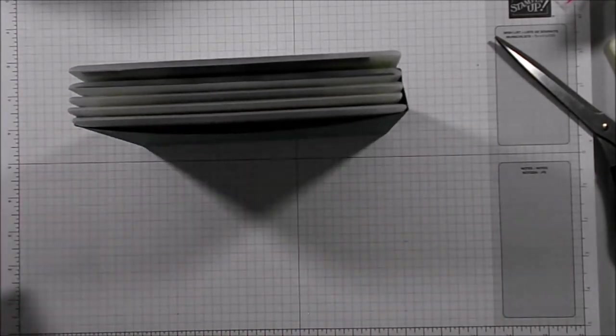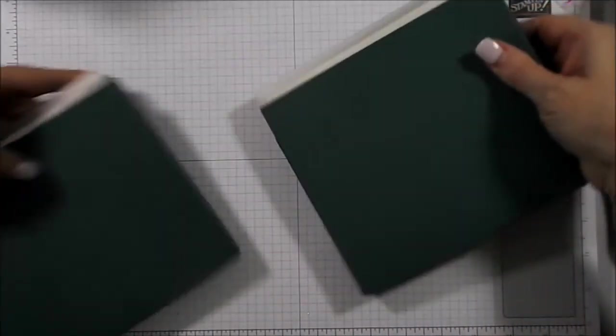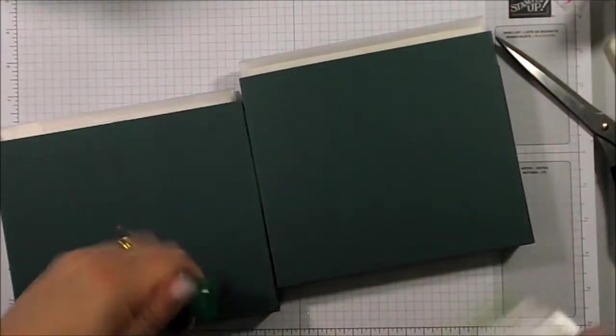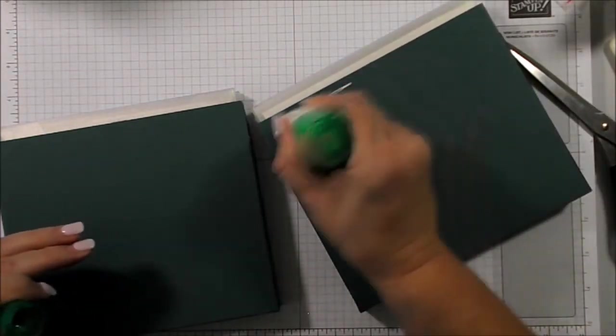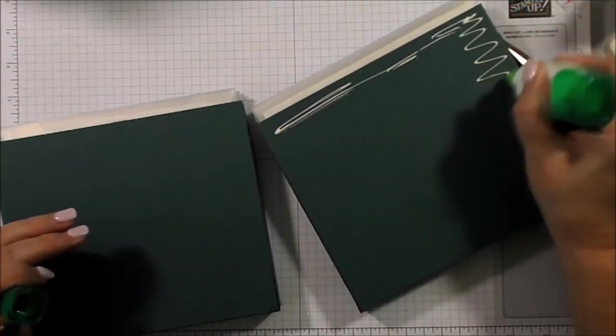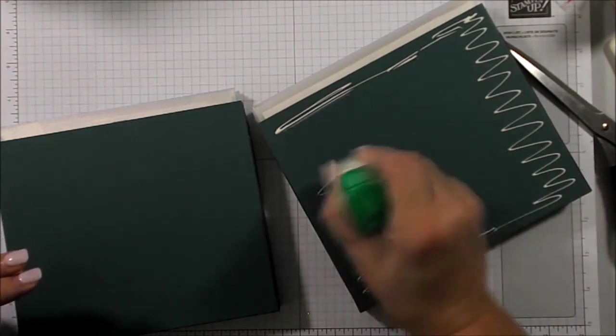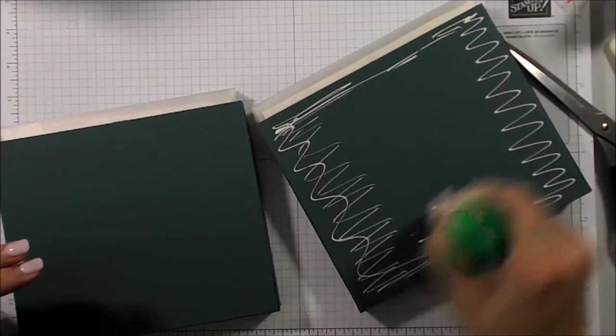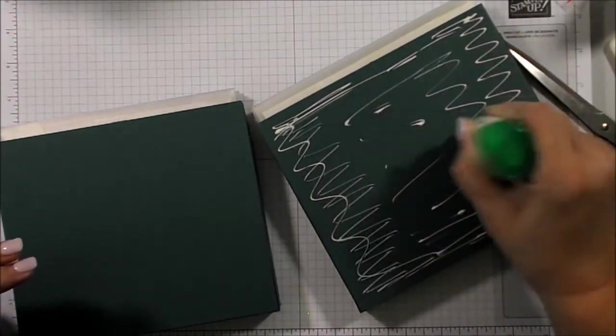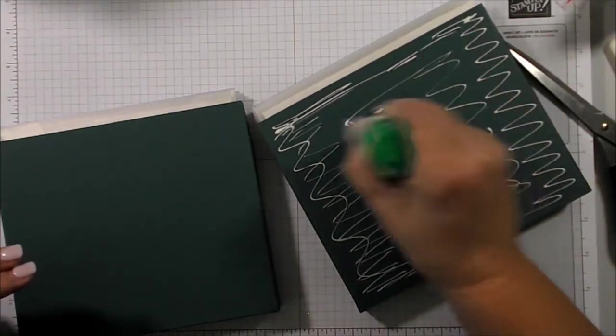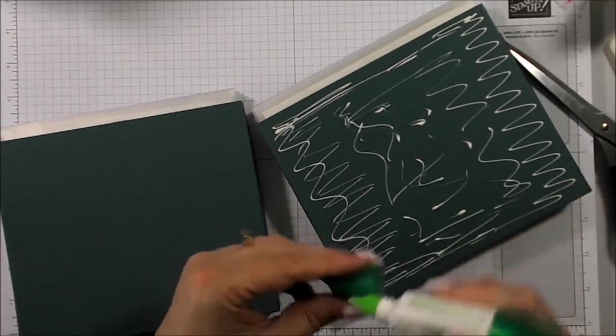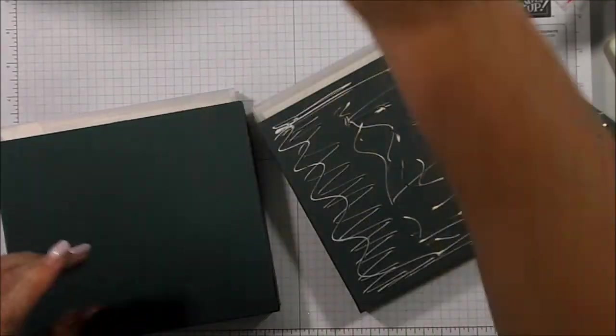So I'm just going to put more Tombow. The Tombow actually gives it more stability, because when it dries, it dries hard. So it actually toughens up the cardstock, should we say. So I'll just pop that aside.